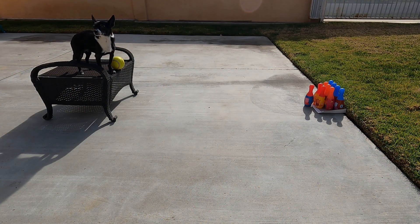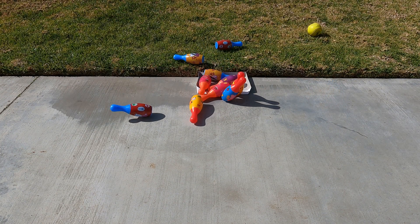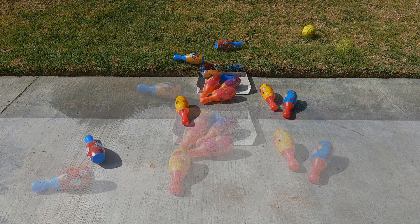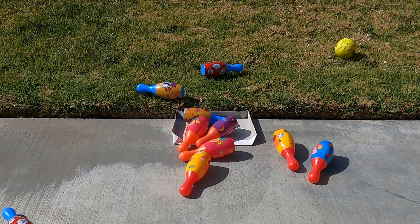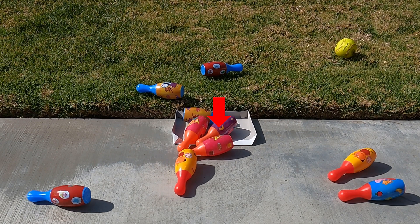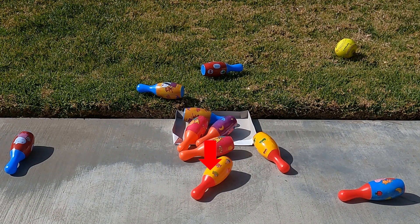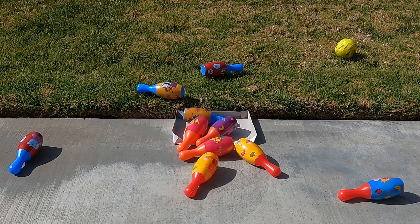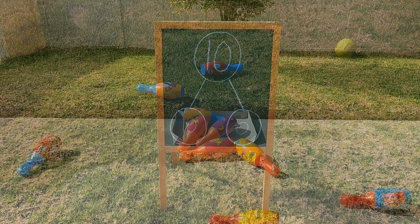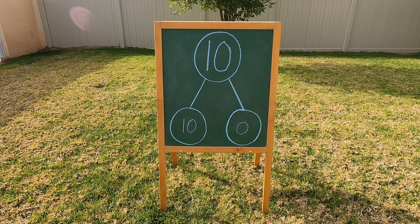Alright Hany, let's have you go first. How many pins do you think you can knock over? Let's see! Whoa Hany, that was a great roll! Let's see how you made ten! You knocked all the pins down — 1, 2, 3, 4, 5, 6, 7, 8, 9, 10. Ten pins knocked over plus zero pins left standing up makes ten pins! Way to go Hany! You got a strike and knocked all the pins over! Ten is the same as ten and zero!